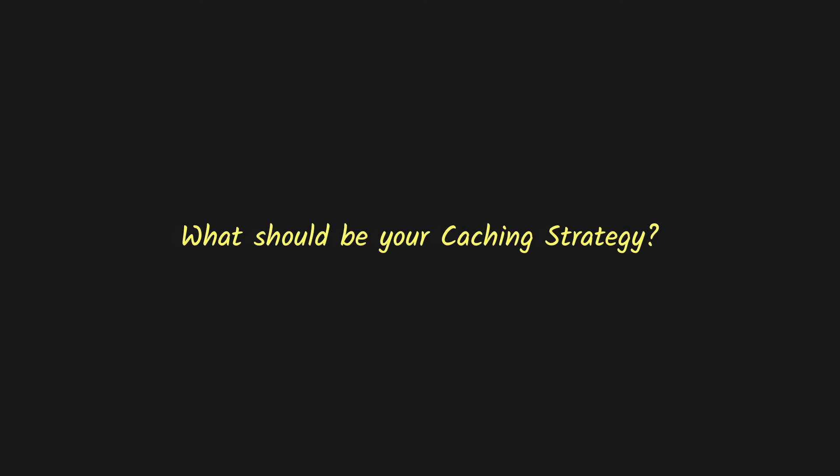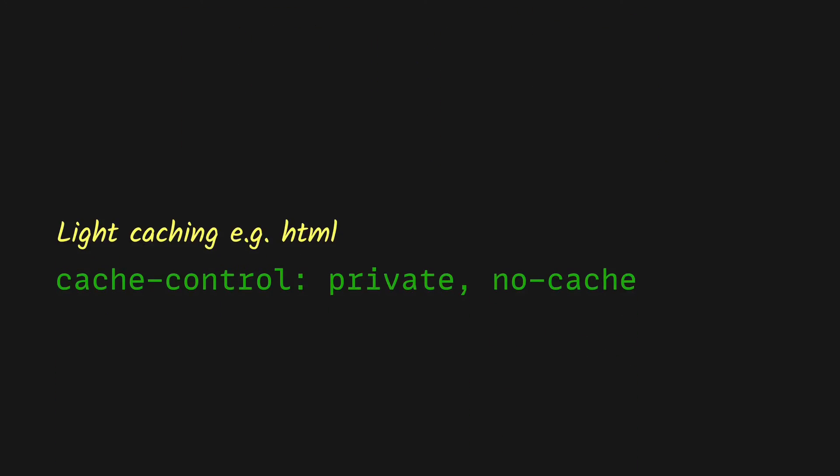Now that we know the caching headers and validation, you might ask what your caching strategy should be — there is no global answer; it depends on the nature of your application but normally falls into two categories. For light caching, items like HTML files can be cached but must be validated with the server before use — this ensures the client always gets the latest HTML but avoids re-downloading unchanged files. For dynamic content it depends on your needs; for example, an RSS feed for a blog might be cached publicly for two hours, while a product listing JSON for an e-commerce website might have different caching headers.